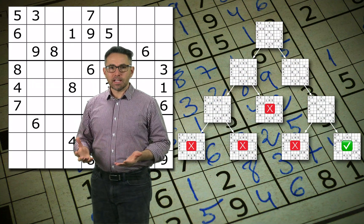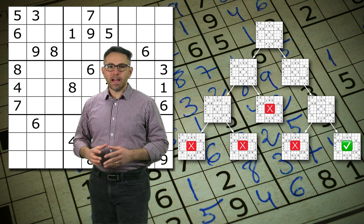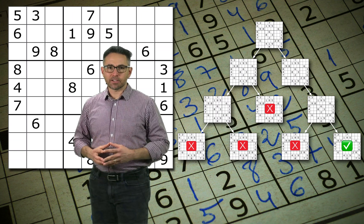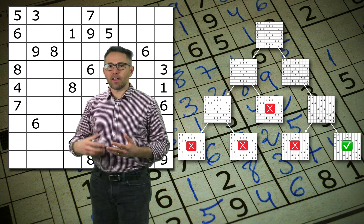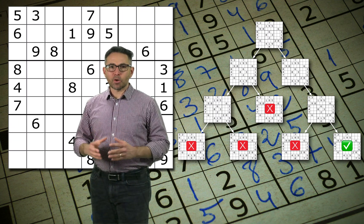The way the algorithm works is by considering each one of the empty cells in turn and trying to add an additional digit to it as if that is the correct solution, and then recursively trying to fill in the next cell and the next cell and the next cell until the program reaches a point at which it sees that one of those three constraints has been violated.